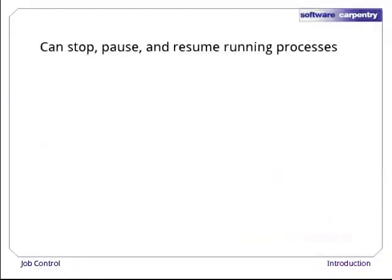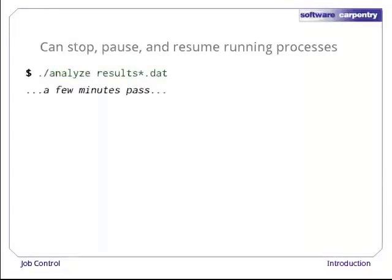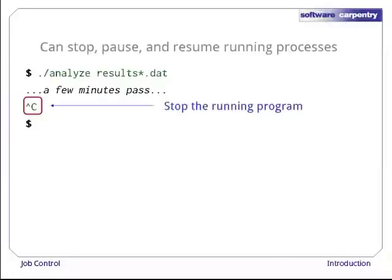The shell provides several commands for stopping, pausing, and resuming processes. To see them in action, let's run our analyze program on our latest data files. After a few minutes go by, we realize that this is going to take a while to finish. Being impatient, we kill the process by typing ctrl-C. This stops the currently executing program right away. Any results that are calculated but not written to disk are lost.